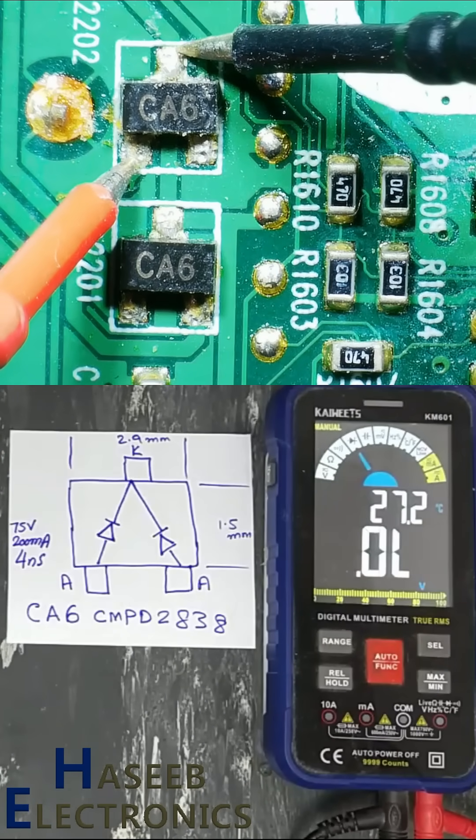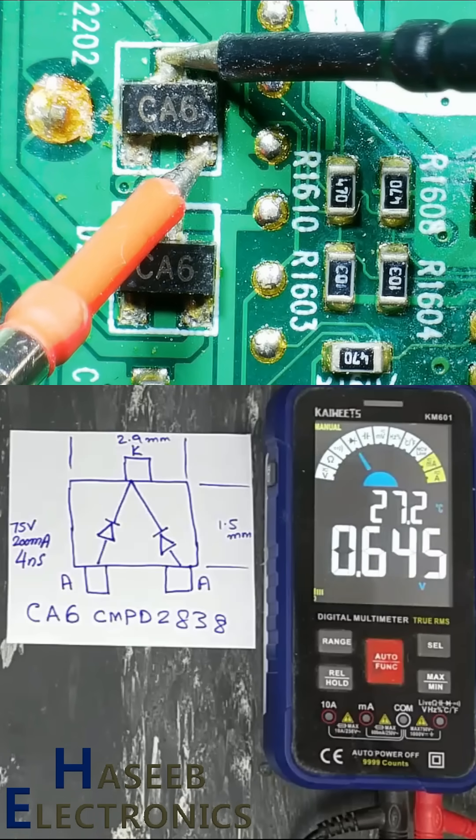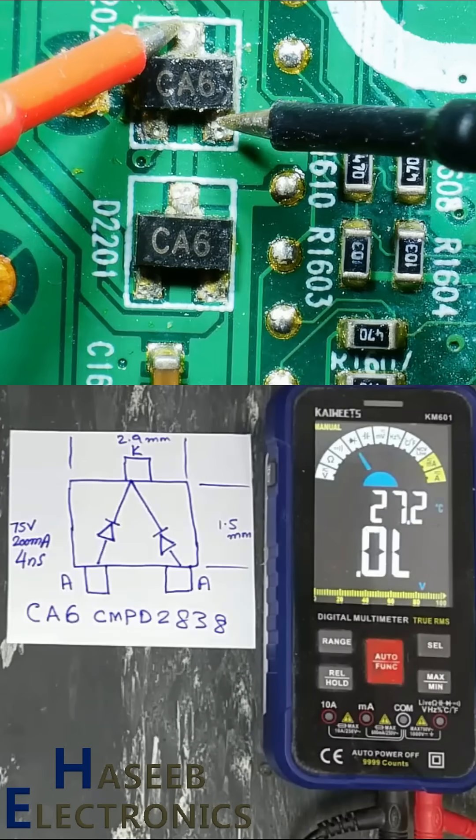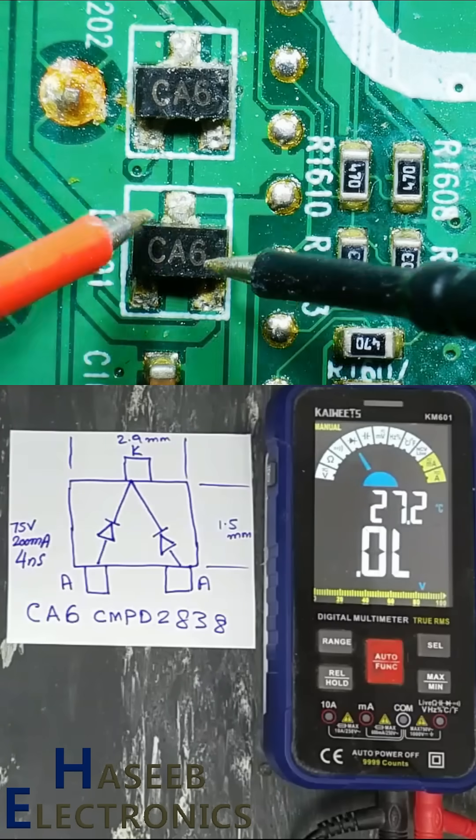Set multimeter to diode mode. In reverse, it reads high. The high reading might be due to parallel components.